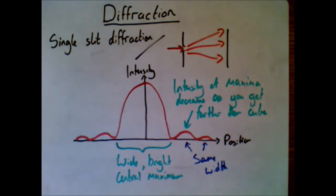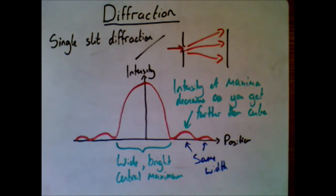The reason this is occurring is because light from different parts of the slit interferes with all the light coming from other parts of the slit, and so we get this effect.